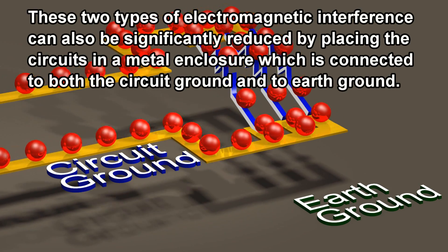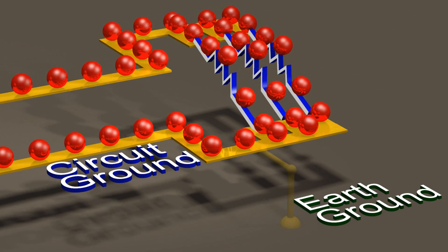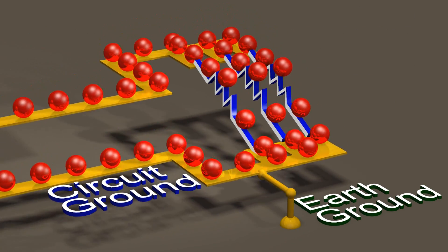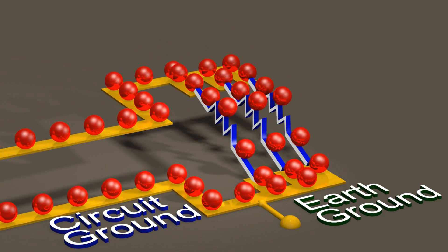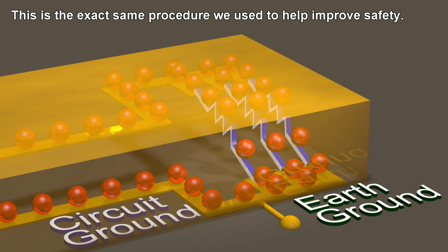These two types of electromagnetic interference can also be significantly reduced by placing the circuits in a metal enclosure which is connected to both the circuit ground and to earth ground. This is the exact same procedure we used to help improve safety.